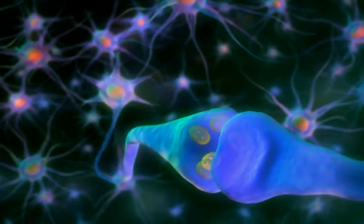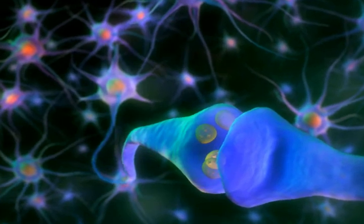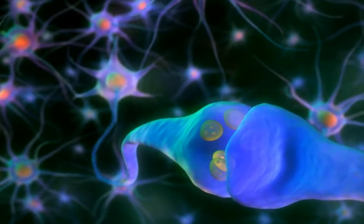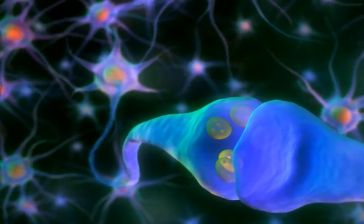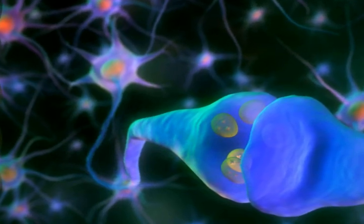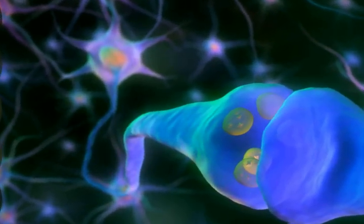Dopamine antagonists act in the brain and are used to treat nausea and vomiting associated with neoplastic disease, radiation sickness, opioids, cytotoxic drugs, and general anesthetics.